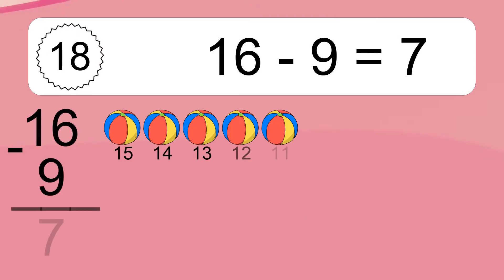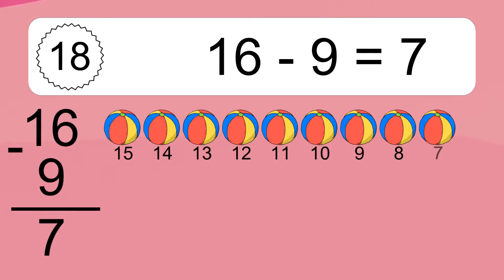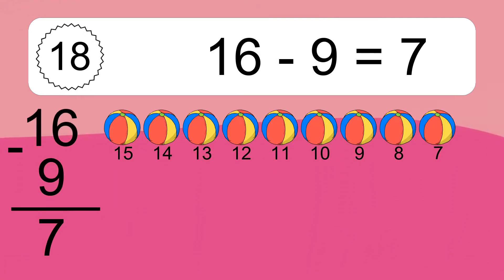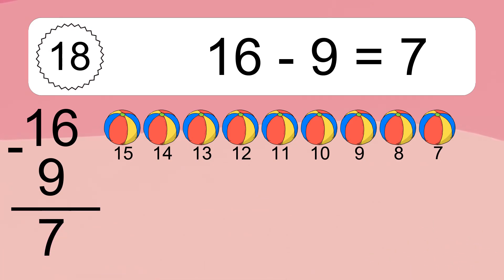16 minus 9 equals what? 16 minus 9 equals 7. Let's count it: 15, 14, 13, 12, 11, 10, 9, 8, 7.